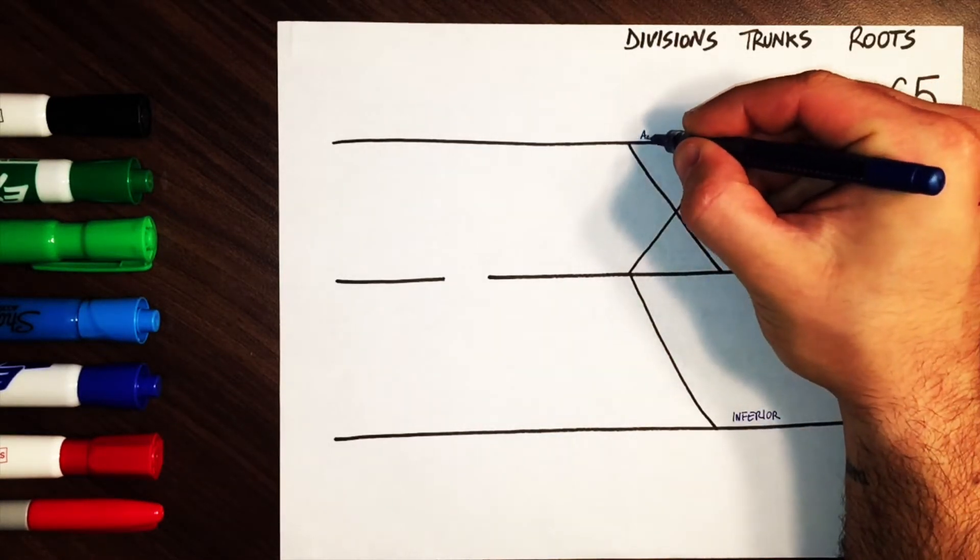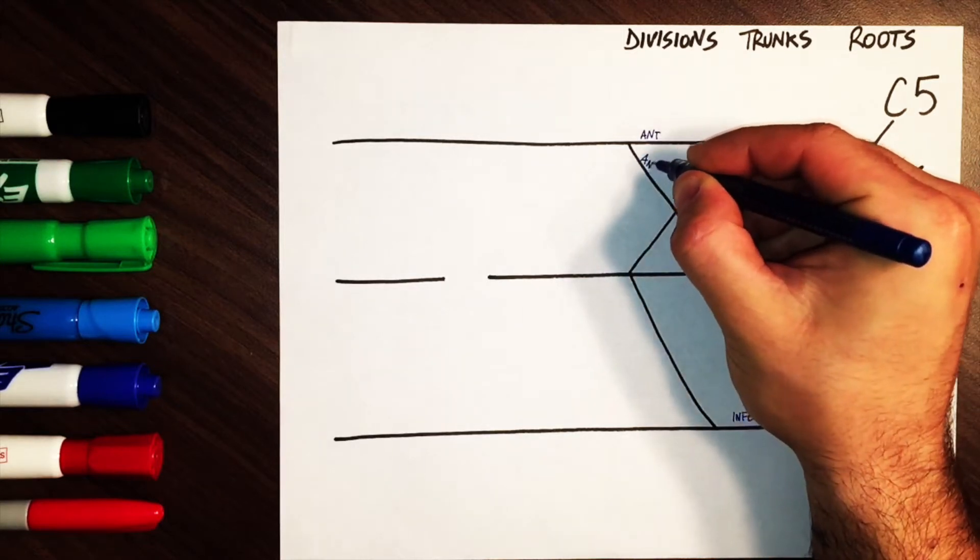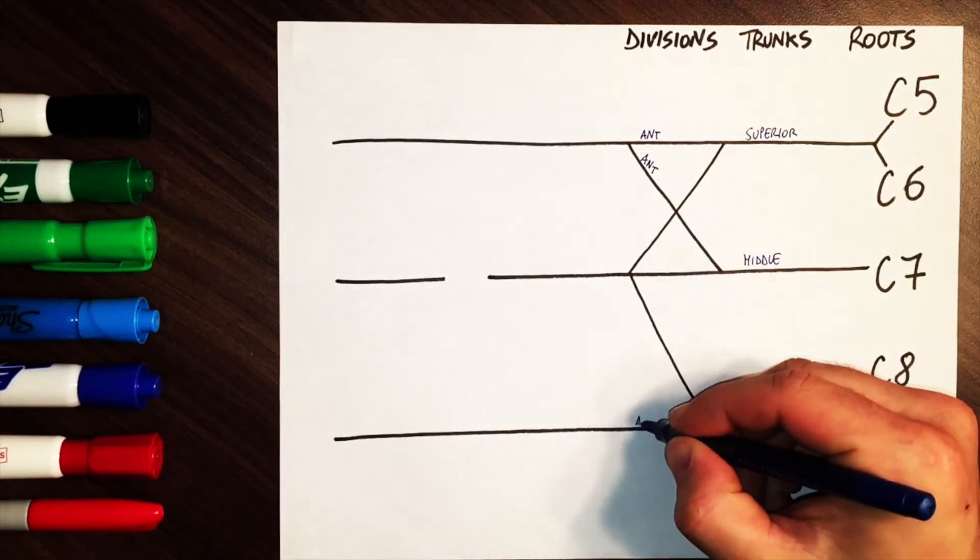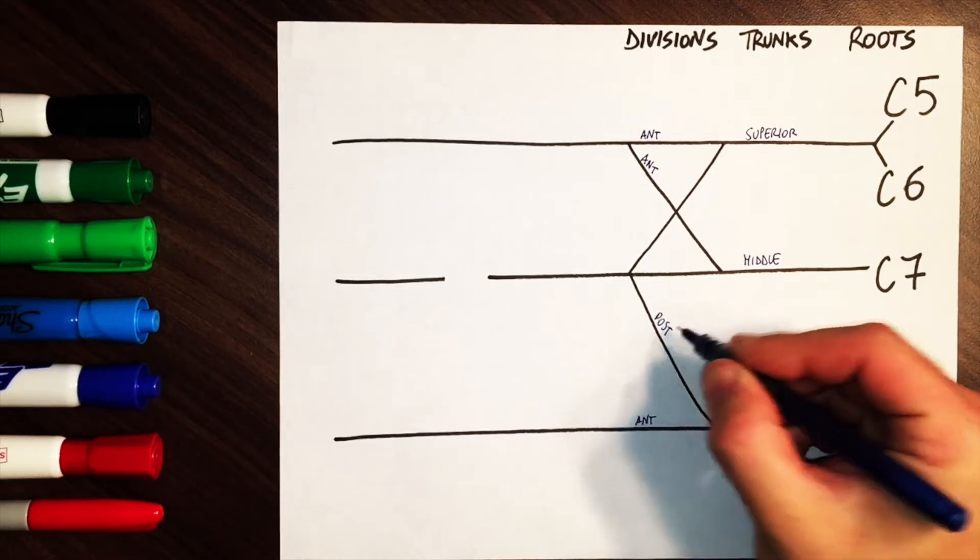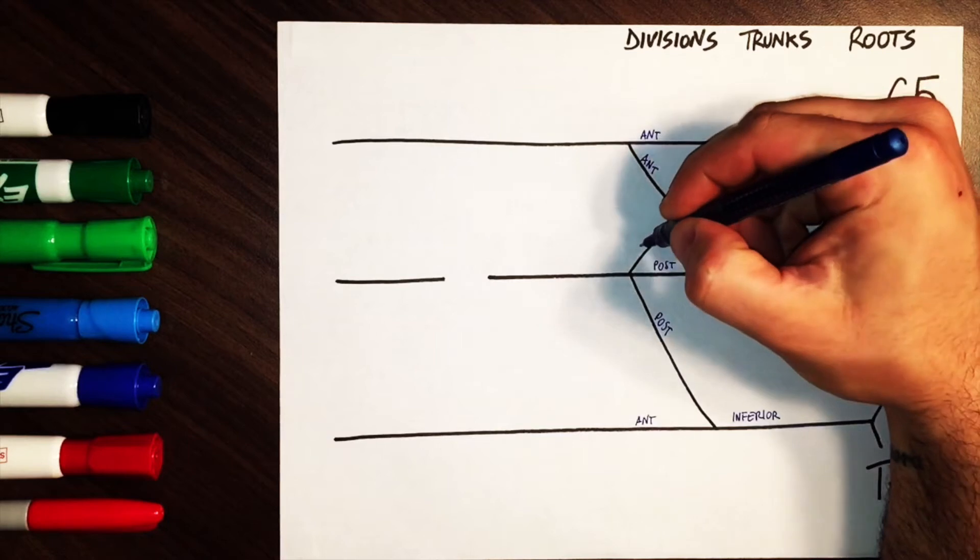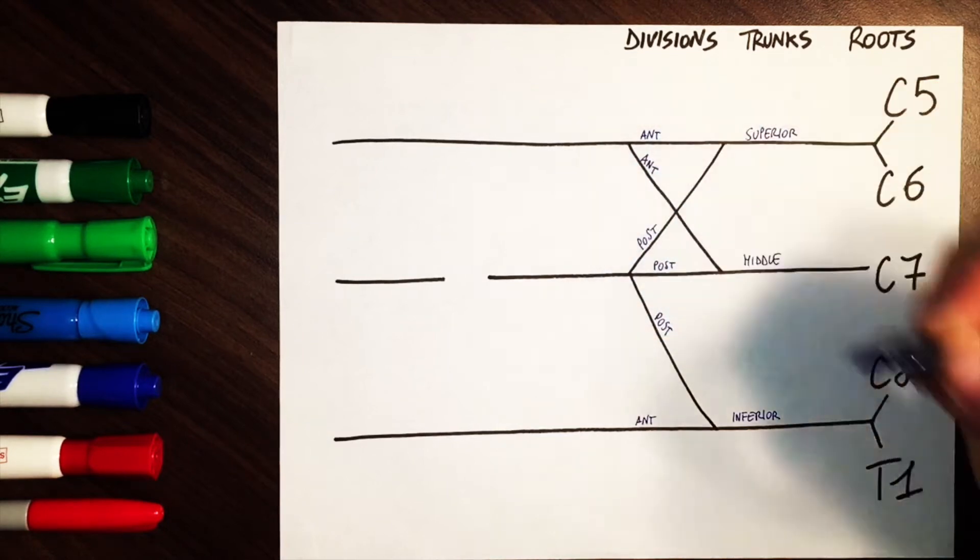With respect to the axillary artery, the divisions from C5, C6, and C7 are anterior, as well as the one from C8 and T1. The divisions from C5 to T1, which will form the radial and axillary nerves, are posterior.